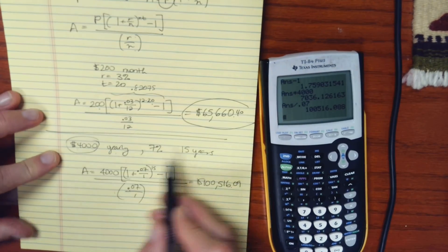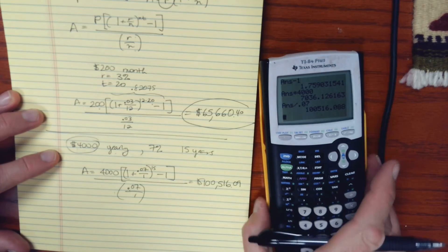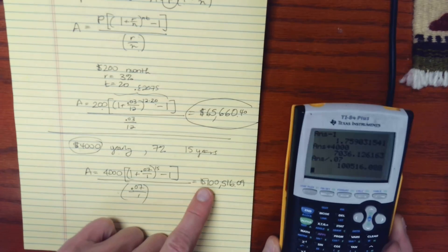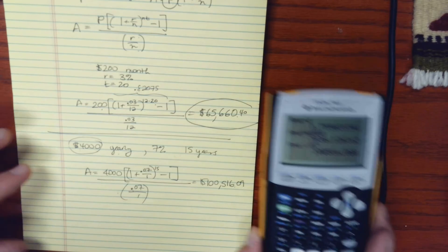So if you are able to set aside $4,000 a year for 15 years, you can end up with over $100,000. But now keep in mind, some of that was money that you contributed and some of it was interest. So let's break it down.